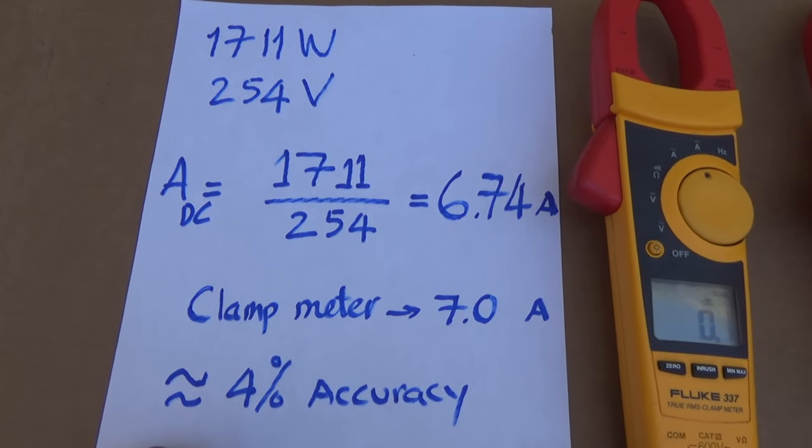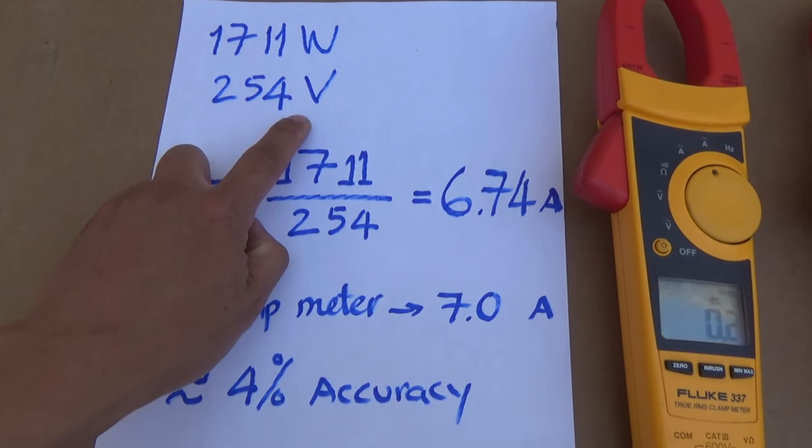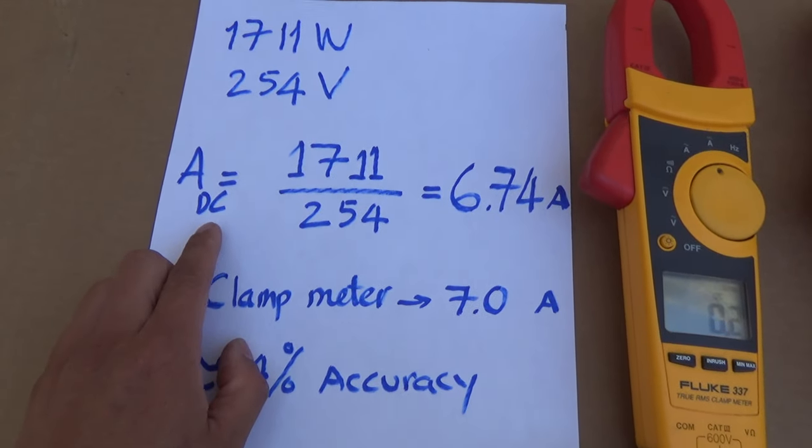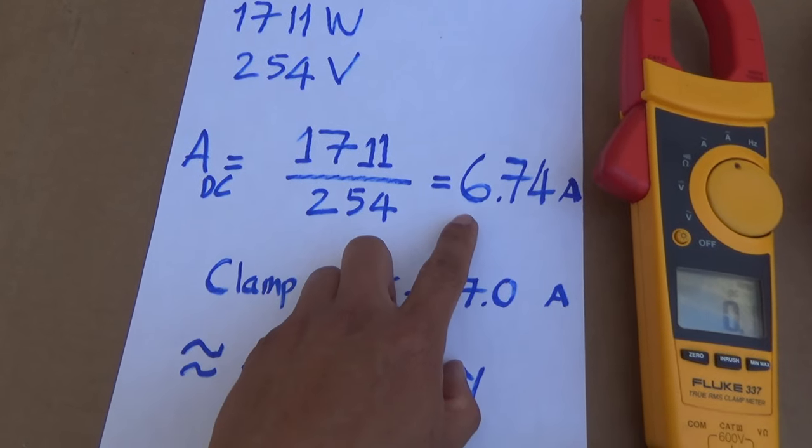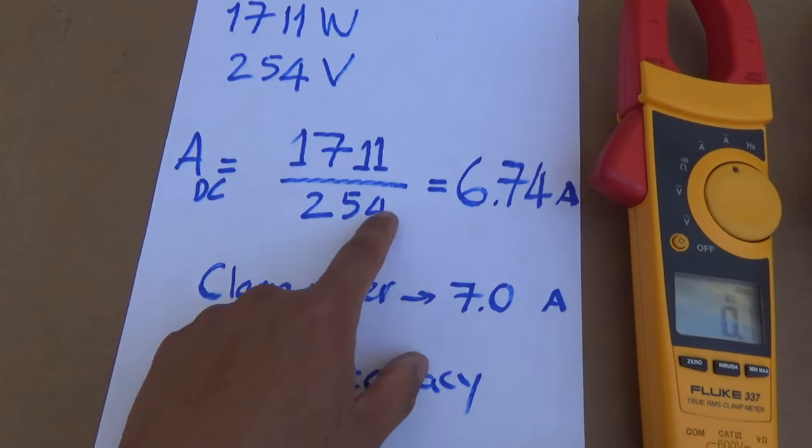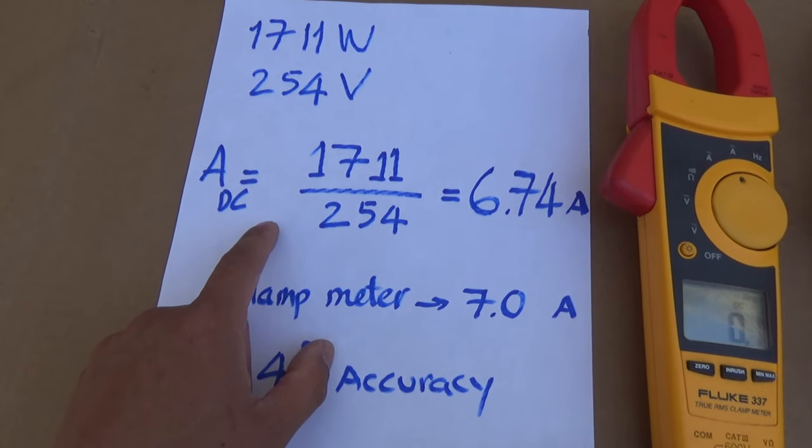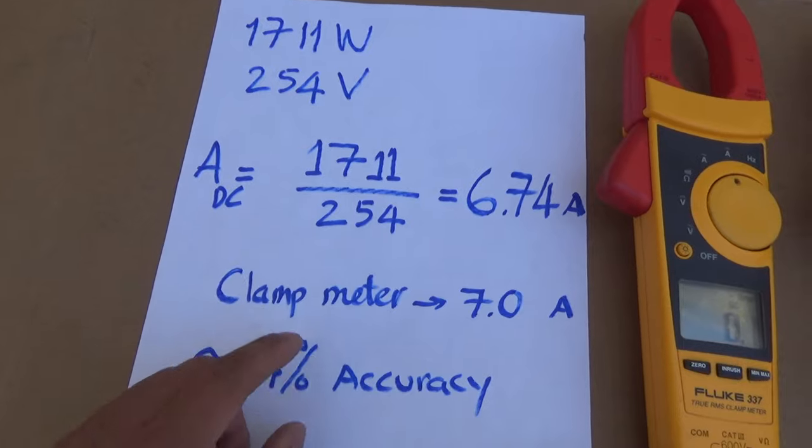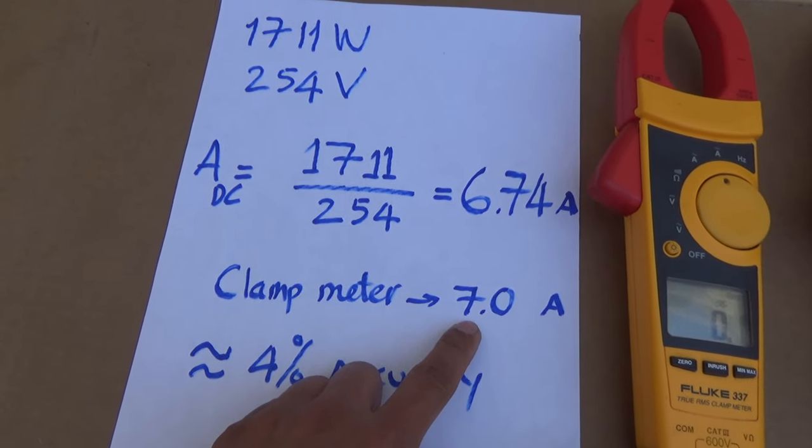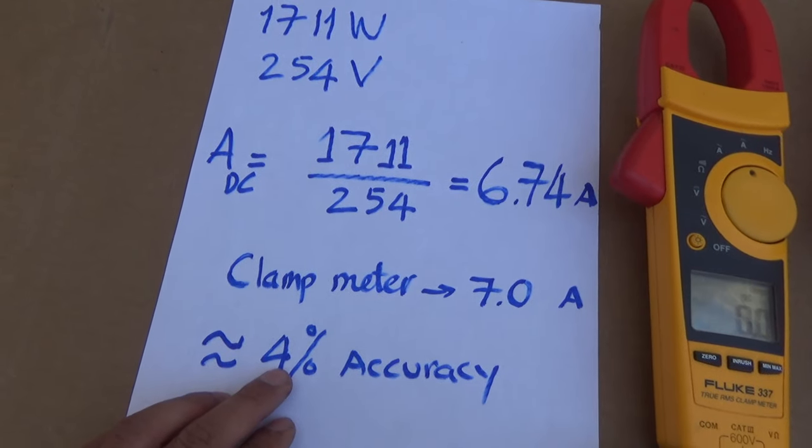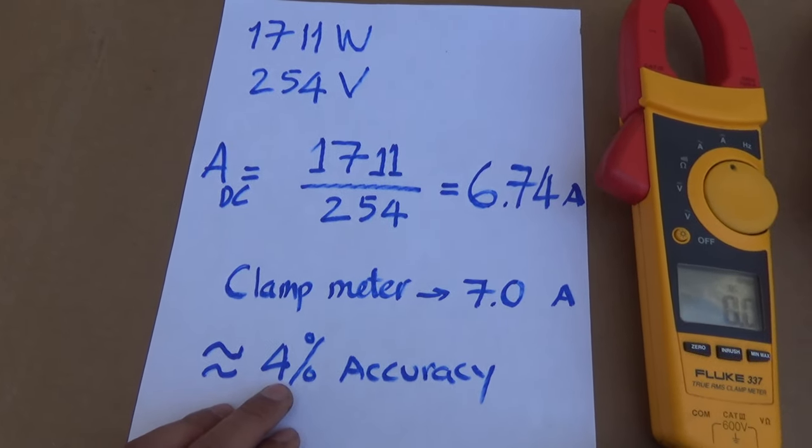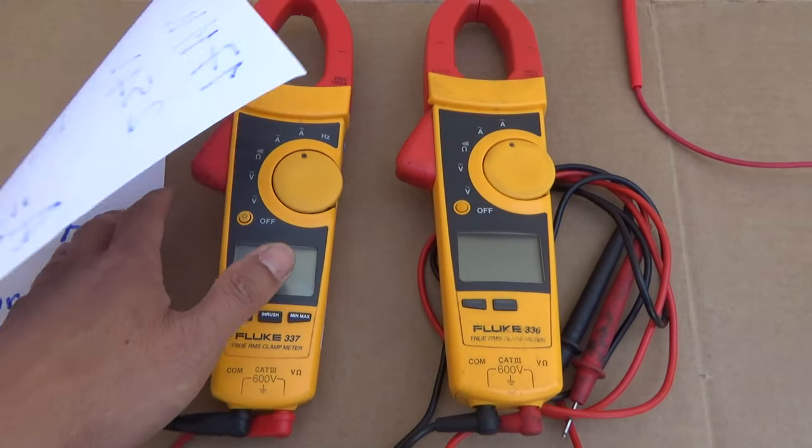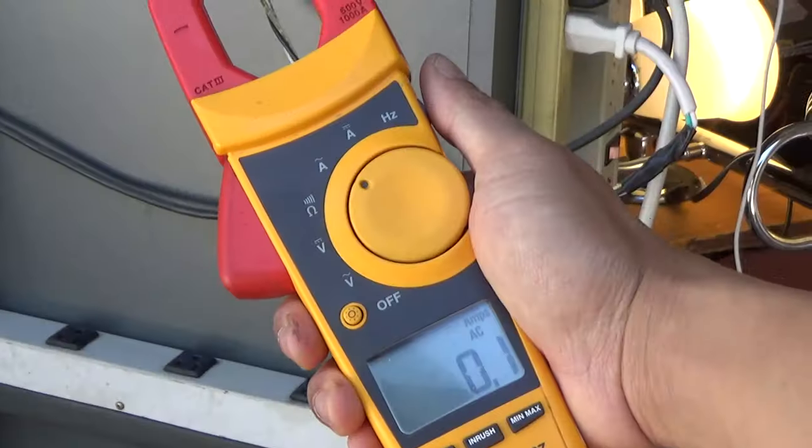Alright. So here's my calculation. We got 1711 watts at 254 volt DC. This is my solar array voltage. If we do the math, the amp DC is exactly 6.74 amp. And this value came from my Sunny Boy inverter. So it should be accurate. It's hardwired into my solar array system. And the clamp meter value is 7 amp. So if you do the math, the accuracy is about 4%. That is pretty impressive. That's pretty accurate. Especially, these are not new. These are used. And who knows when the last time these were calibrated.